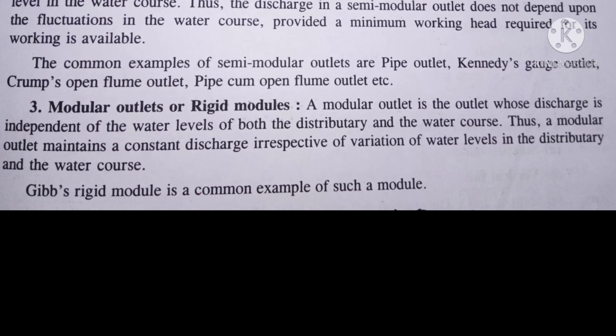And third outlet is modular outlet, aur rigid modules. Is outlet ki khasiyat ye hai ki jo farmer ya cultivator hai, woh isse chher-chhad nahi kar sakta. Woh zyada paani ya zyada paani nahi le sakta outlet par, kyunki is mein kya hoga ki jitna ki ek irrigation ke liye, every cultivation ke liye paani chahiye, utna hi paani outlet par farmers ke liye milega. Is outlet pe zyada paani nahi nikalta — jitna required ho, utna hi paani outlet par rehta hai.